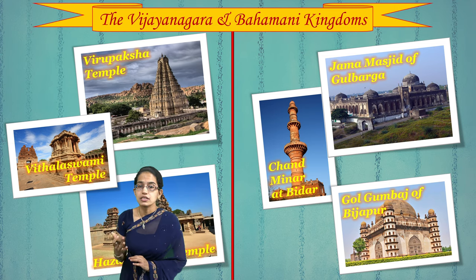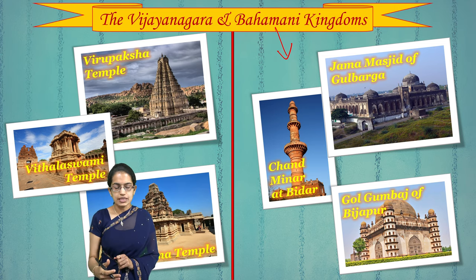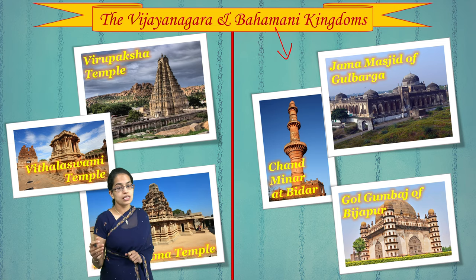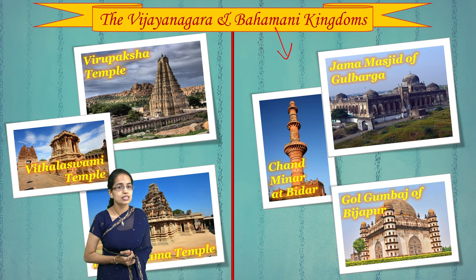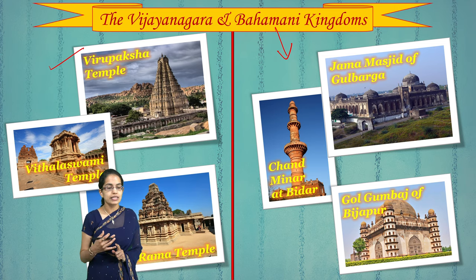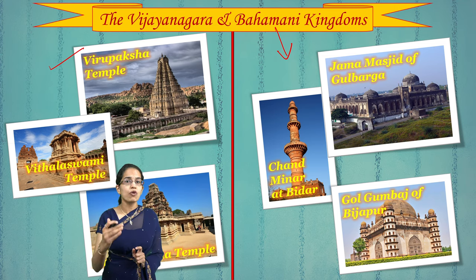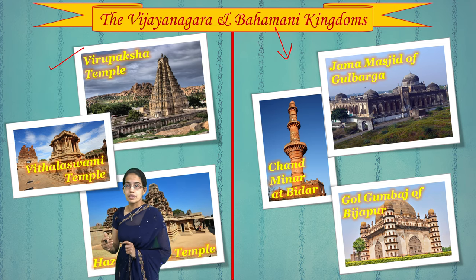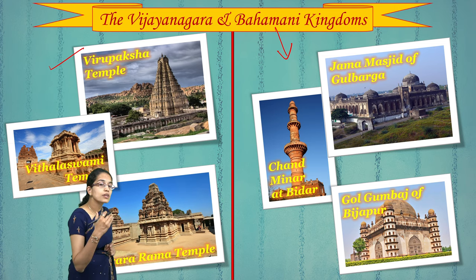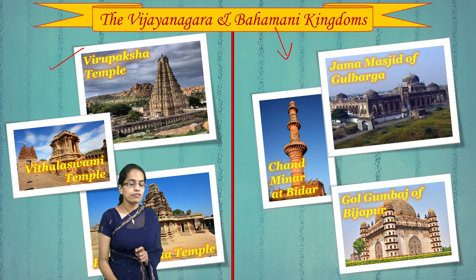Among the major architectural marvels, the Bahamani kingdom produced Chand Minar at Bidar, Jama Masjid at Gulbarga, and Gol Gumbaz at Bijapur. Gol Gumbaz is particularly renowned for its acoustic system. Under the Vijayanagar empire, three classic temples stand out: the Hazara Rama temple, which was a private chapel for the kings within the royal enclosure; the Vitthalswamy temple, dedicated to Lord Vishnu; and the Virupaksha temple, dedicated to Lord Shiva.